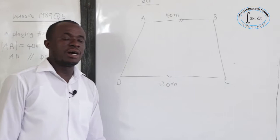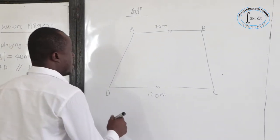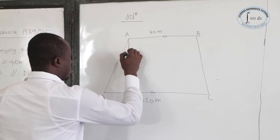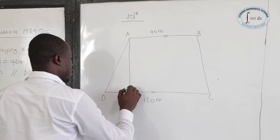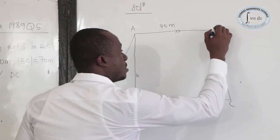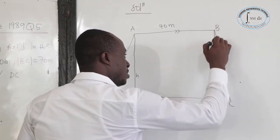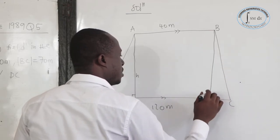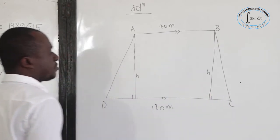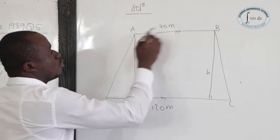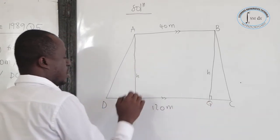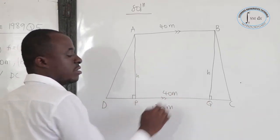Now, let's consider a line from A to DC which is perpendicular to it. Let's also consider a perpendicular line from B to DC. Clearly, this is the height. This is also H. Now, if the distance A to B is 40, then let me call this point P and this point Q. Then PQ would also be 40 meters.